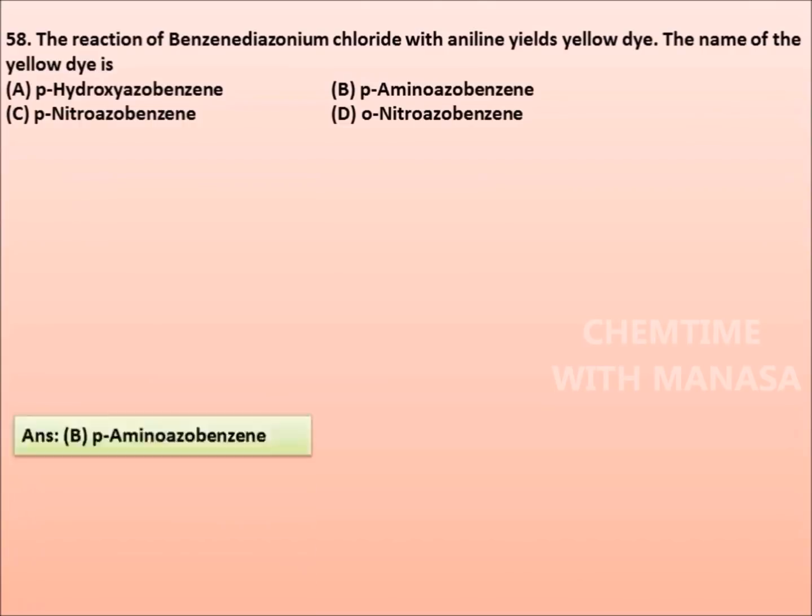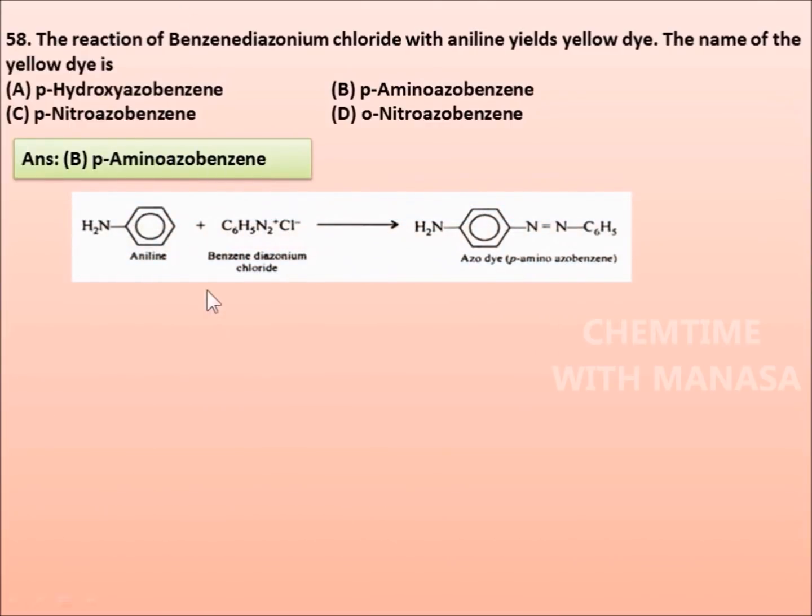Question 58: The reaction of benzene diazonium chloride with aniline yields yellow dye. The name of the yellow dye is p-hydroxyazobenzene, p-aminoazobenzene, p-nitroazobenzene, or o-nitroazobenzene. Answer is p-aminoazobenzene. And the reaction is aniline reacts with benzene diazonium chloride to give an azo dye called p-aminoazobenzene.